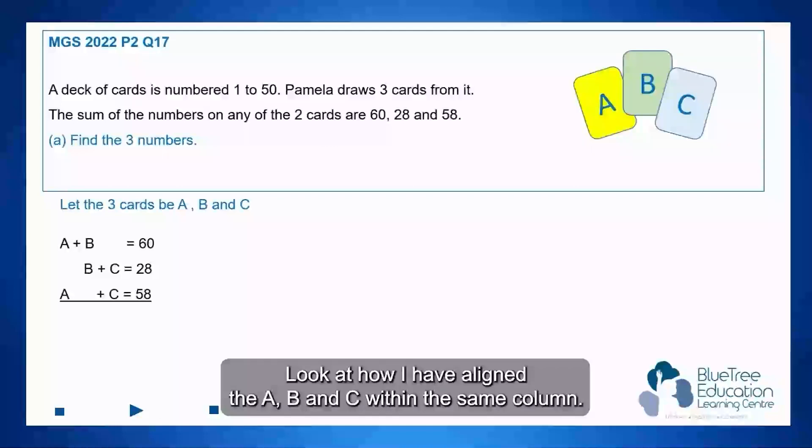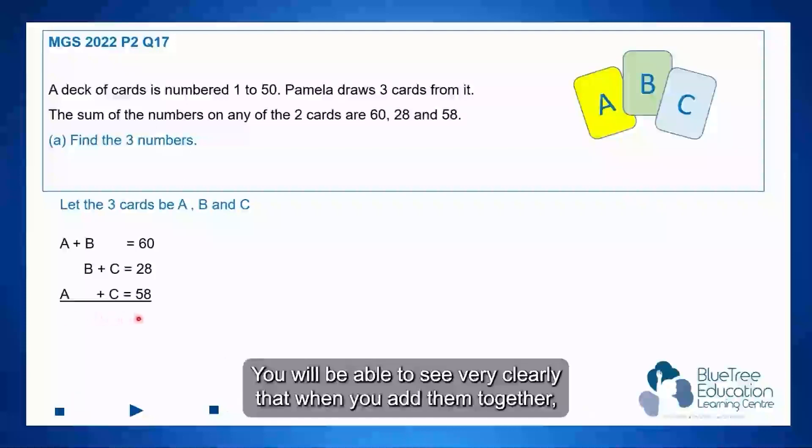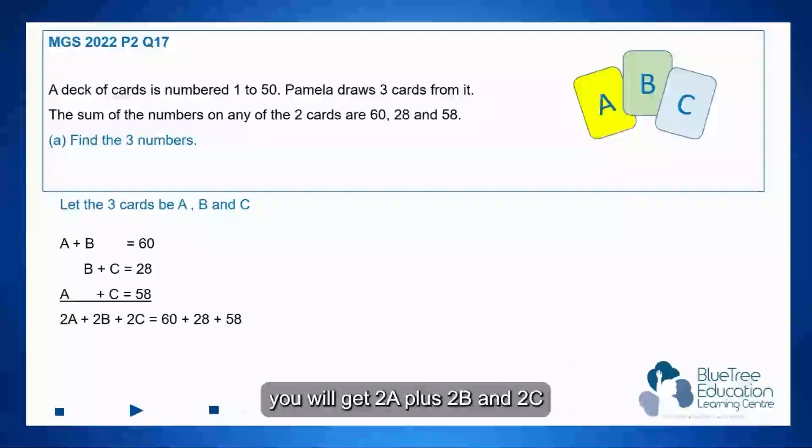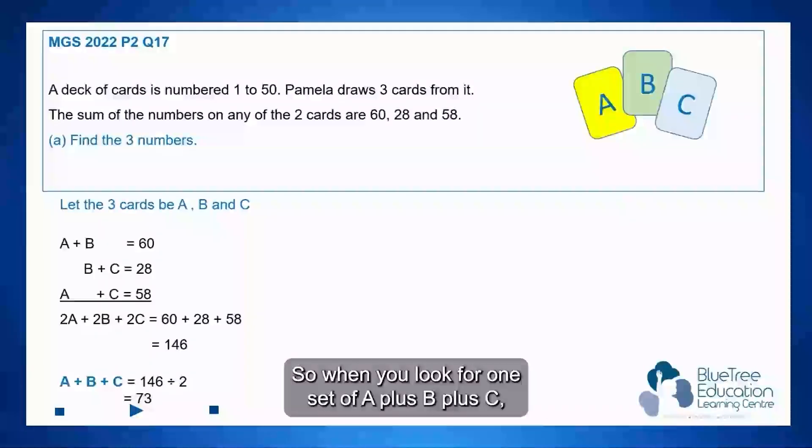Look at how I have aligned the A, B and C within the same column. You will be able to see very clearly that when you add them together, you will get 2A plus 2B and 2C, which gives you a total of 146. This 146 is made up of two sets of A, B and C put together. So when you look for one set of A plus B plus C, the total will be 146 divided by 2, which is 73.